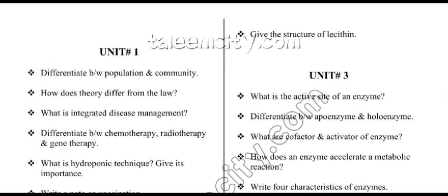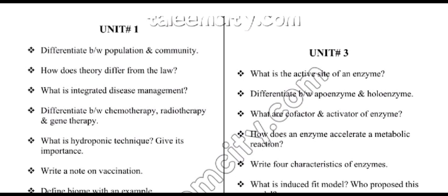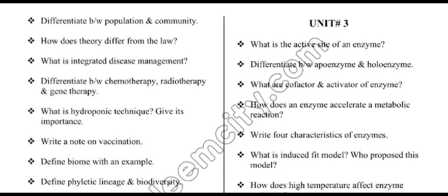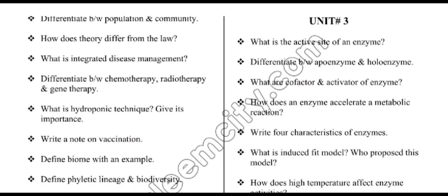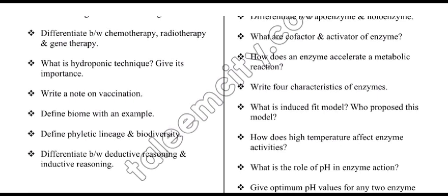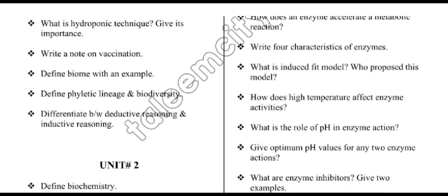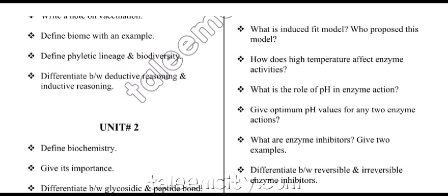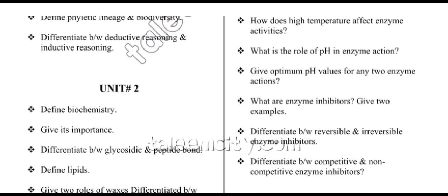From unit number three, we have: active sites of an enzyme; differentiate between apoenzyme and holoenzyme; what are cofactors and activators of enzyme; how does an enzyme accelerate a metabolic reaction; write four characteristics of enzyme; what is the induced fit model and who proposed it; how does high temperature affect enzyme activity; what is the role of pH in enzyme action — give optimum pH value for any two enzymes; what are enzyme inhibitors — give two examples; difference between reversible and irreversible enzyme inhibitors; difference between competitive and non-competitive enzyme inhibitors.